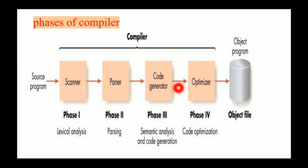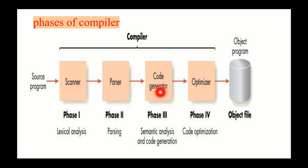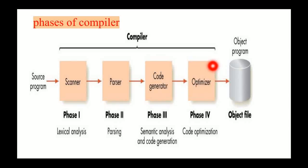The semantic analysis verifies whether the code produces a valid parse tree or not. After verifying the tree, the code generator generates the code — this is phase three. The output then passes to the optimizer, which optimizes the code.